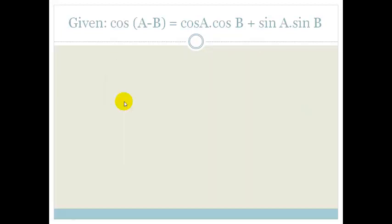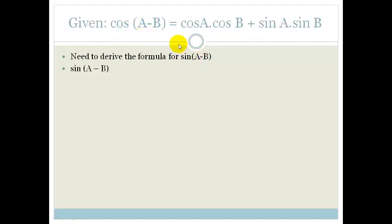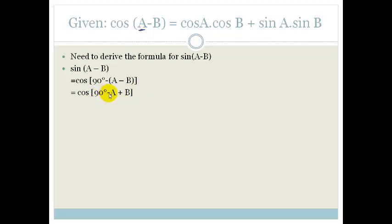Now let's look at the others. We're again given cos(A - B) = cos A cos B + sin A sin B, but this time we have to derive the formula for sin(A - B). Since sine and cosine are co-functions, sin(A - B) can be written as cos(90° - (A - B)), which rearranges to cos(90° - A + B), and then we regroup it as cos((90° - A) - (-B)).